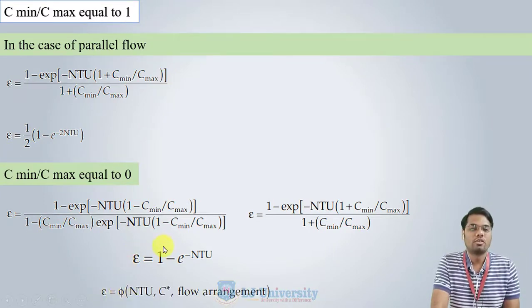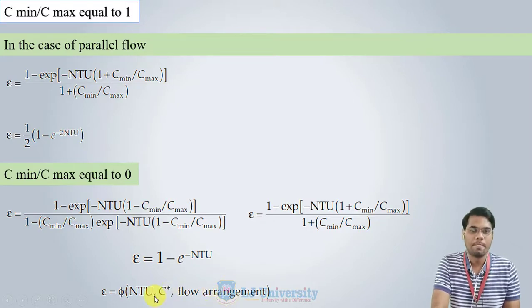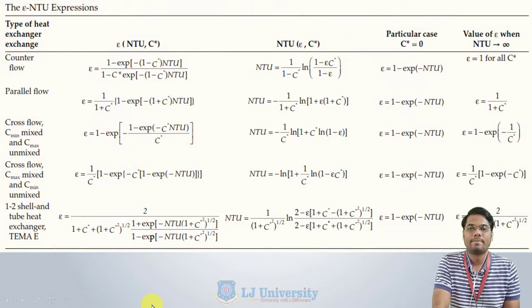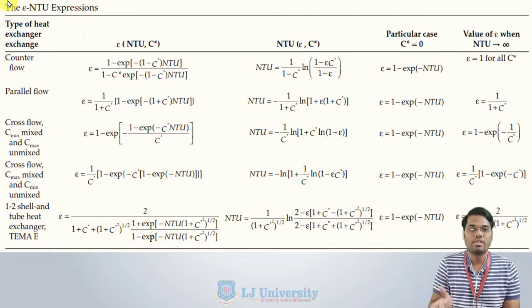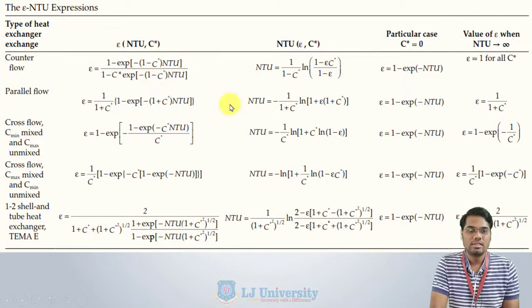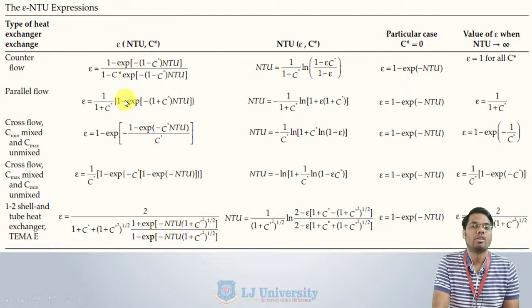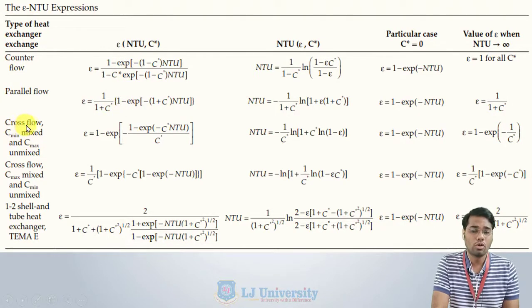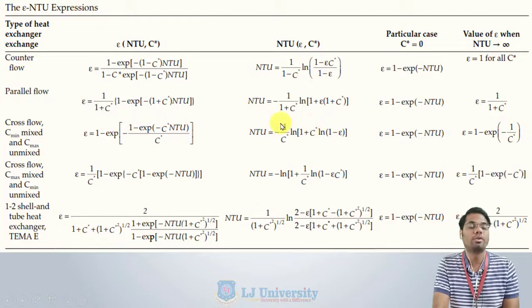Effectiveness is a function of NTU, flow arrangement, and heat capacity ratio. While equations for counter flow and parallel flow were derived previously, deriving equations for cross flow or shell and tube heat exchangers is very complex. Research papers provide equations for various configurations: counter flow, parallel flow, cross flow with C_min mixed and C_max unmixed, cross flow with C_max mixed and C_min unmixed, and shell and tube types. These are the equations to be used in our numericals.